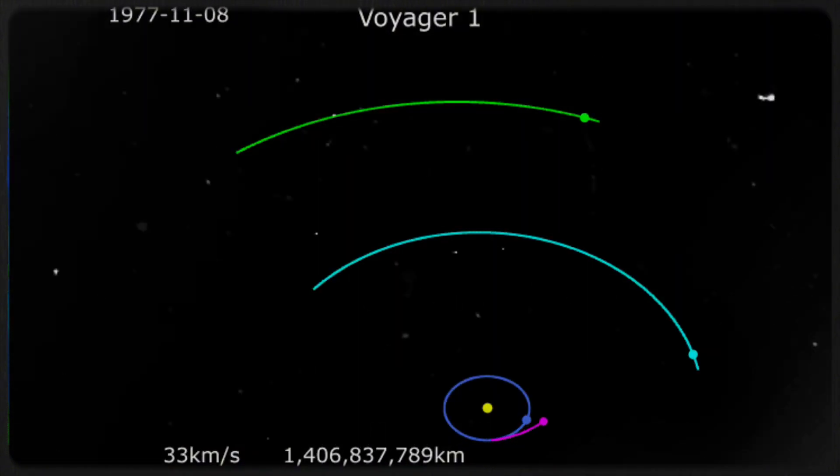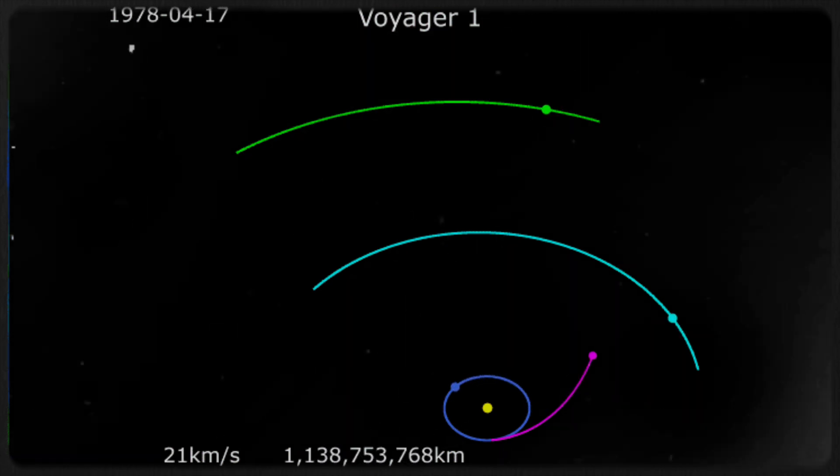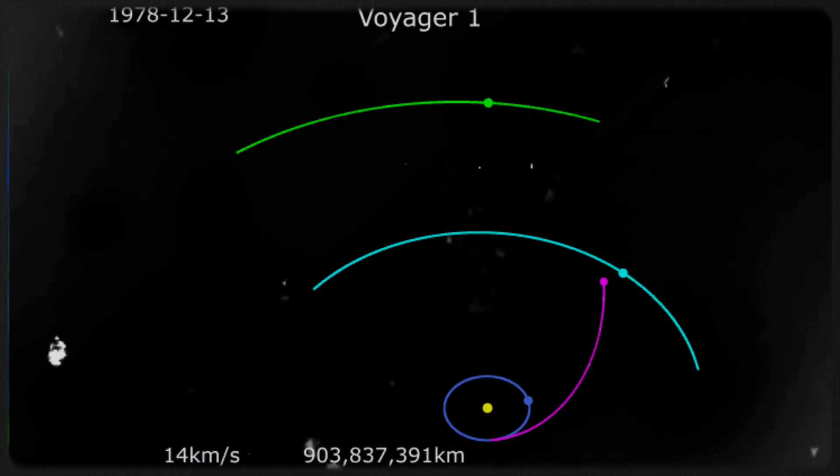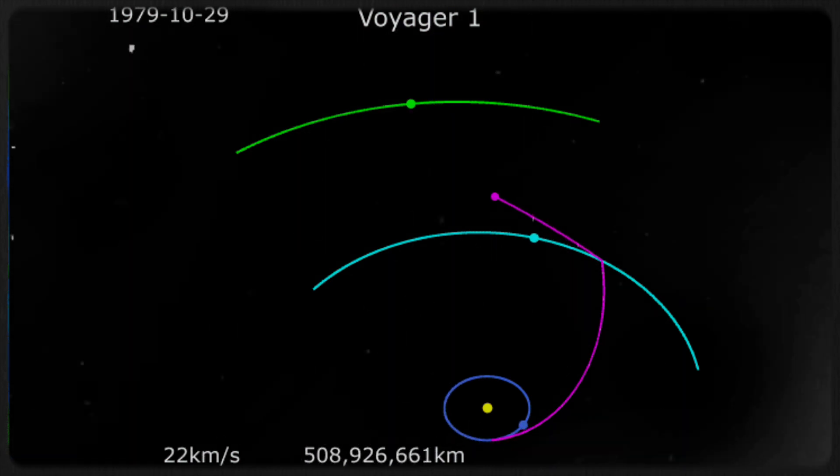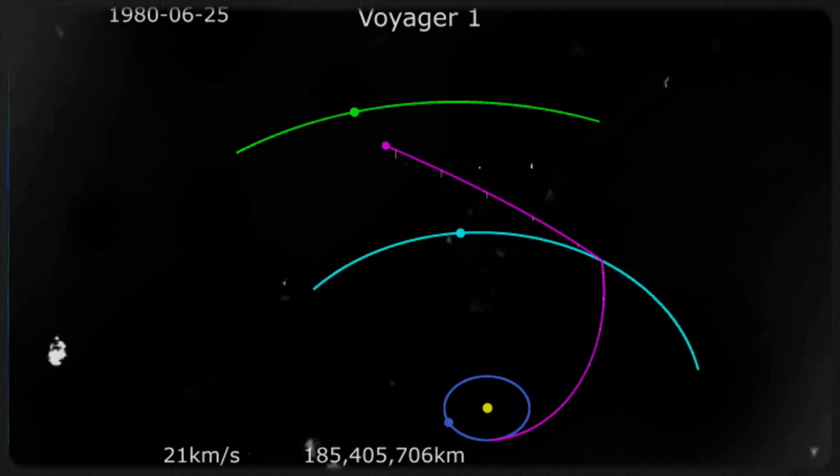Even when the Voyagers fall silent, their journeys will continue. Voyager 1 will pass Proxima Centauri, our closest neighboring star, in 16,700 years, and Voyager 2 will follow 3,600 years later.